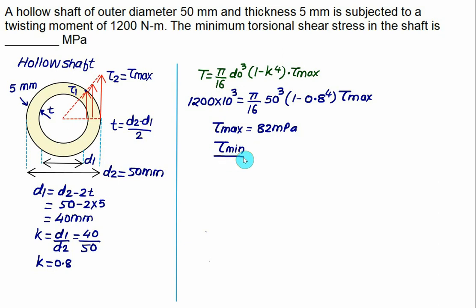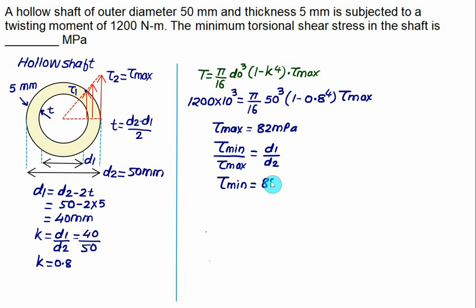The minimum shear stress corresponds to d1 and the maximum corresponds to d2. So τ_min / τ_max = d1 / d2. Substituting: τ_min = 82 × (40/50) = 82 × 0.8 = 65.6 MPa.